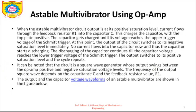At this point, the output of the circuit switches to the negative saturation level immediately. The capacitor then begins discharging, and this continues until the capacitor voltage reaches the lower trigger value of the Schmitt trigger. The output then switches back to positive saturation and the cycle repeats. It can be noted that the circuit is a square wave generator whose output swings between the op-amp positive and negative saturation voltage levels. The frequency of the output square wave depends on capacitance C and feedback resistor R1.